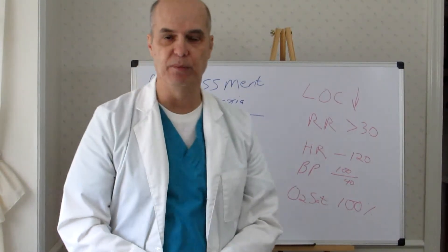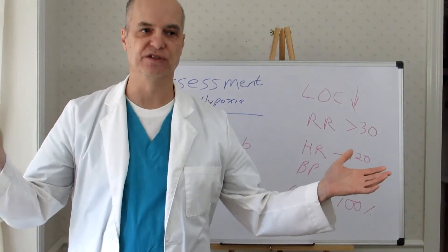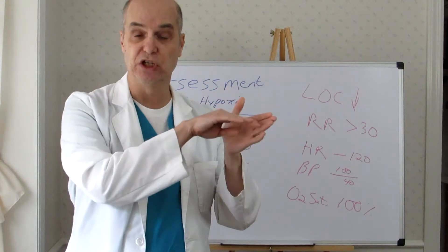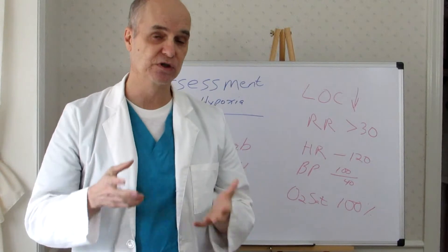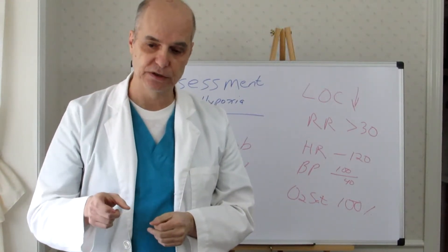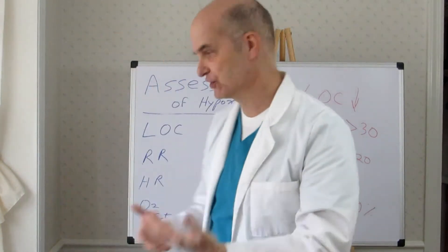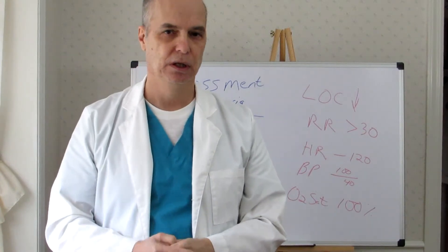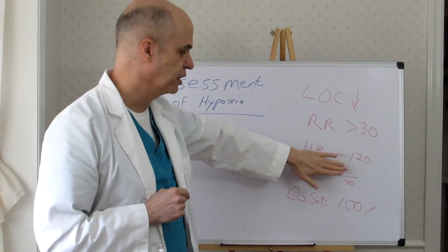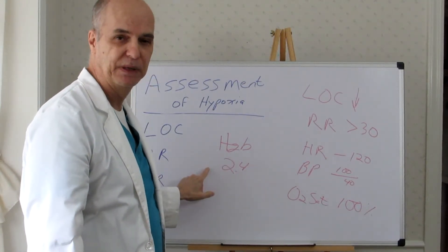I thought I had died and gone to heaven, because instead of doing an arterial puncture to measure oxygenation status, all he had to do was hook a probe to the earlobe for a continuous readout of O2 saturation. Nowadays, O2 saturation can be measured by a pulse oximeter small enough to fit on your finger. But looking at that ER patient again: if you only measured the O2 saturation without knowing level of consciousness, respiratory rate, heart rate, blood pressure, or hemoglobin — it looks fine at 100%.